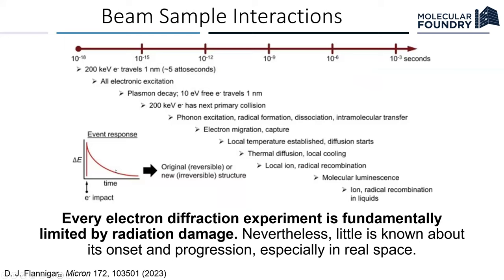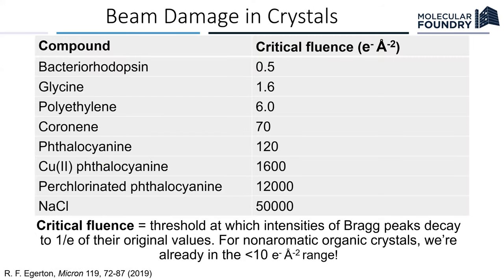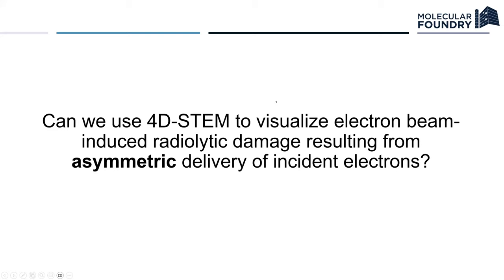So the other thing is beam sample interactions are kind of what limit almost a lot of different imaging technologies, either at the ALS or here. And so you get all these different levels of things that happen. And so nevertheless, little is known about the onset and progression, especially in real space of these objects. So usually what people do is they go in diffraction space, they illuminate their object, and they kind of look at the diffraction pattern, which are these dots in diffraction space, and they figure out when does the diffraction pattern go away. So that means you're reducing your long-range order of your crystal and you can no longer measure it. It's basically now amorphized. So most of these crystals are in very critical, very low fluence ranges. And so what we want to do is use 4D STEM to visualize electron beam induced radiolytic damage resulting from asymmetric delivery of incident electrons.